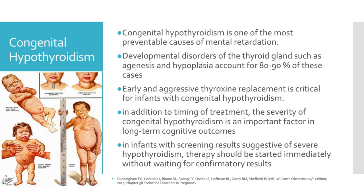Congenital hypothyroidism is one of the most preventable causes of mental retardation worldwide. Developmental disorders of the thyroid gland such as agenesis and hypoplasia account for about 80-90% of these cases. Early and aggressive thyroxine replacement is critical for infants with congenital hypothyroidism. In addition to timing of treatment, the severity of congenital hypothyroidism is an important factor in long-term cognitive outcomes. In infants with screening results suggestive of severe hypothyroidism, therapy should be started immediately even without waiting for confirmatory results.